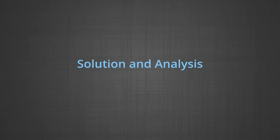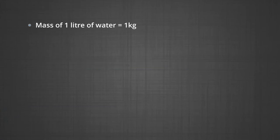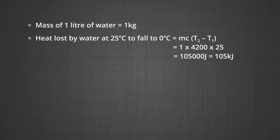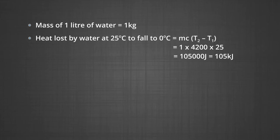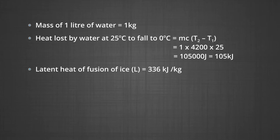Mass of one liter of water is 1 kg. Heat lost by water cooling from 25°C to 0°C equals mass × specific heat × ΔT = 1 kg × 4200 J/kg·K × 25 = 105 kJ. The latent heat of fusion of ice is 336 kJ/kg, so the latent heat lost in converting 1 kg of water into ice is 336 kJ.